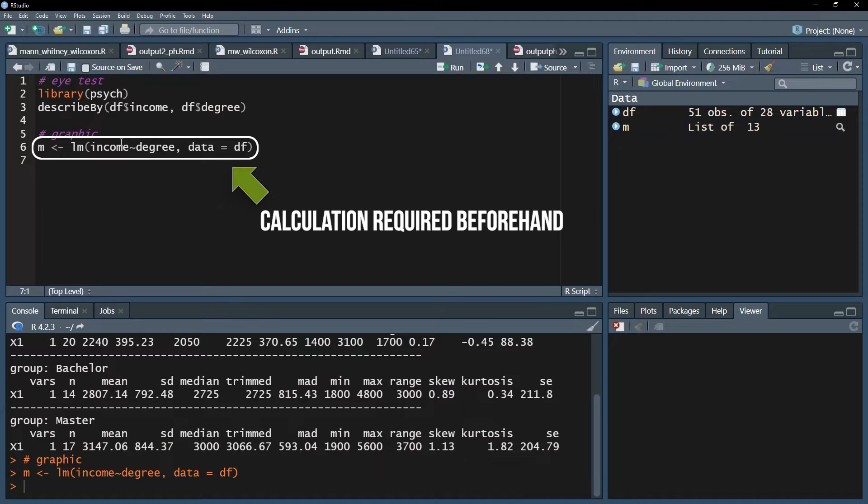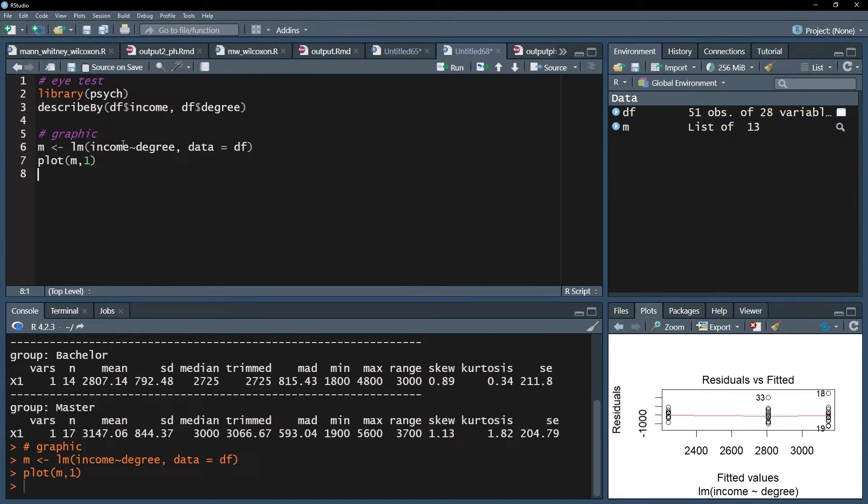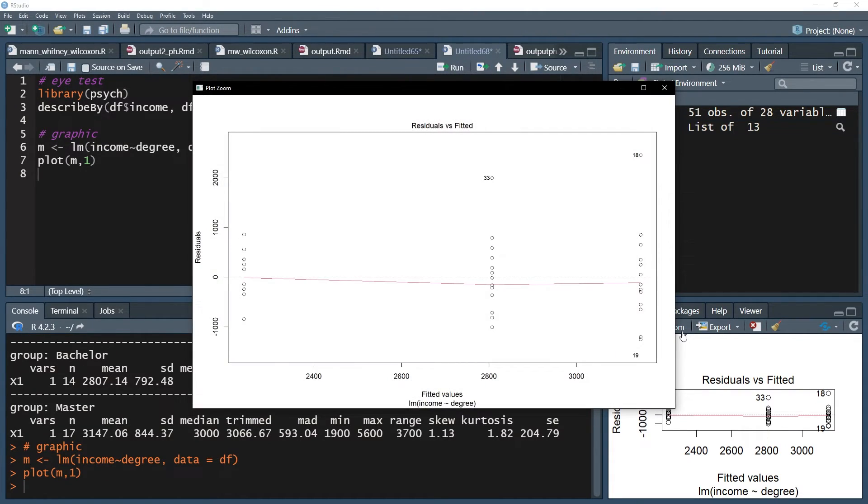It is therefore advised to check the residuals and the fitted values against each other. For this, use the plot function on your residuals and request the graph by adding comma 1. The red line should be as straight as possible, meaning it should be parallel to the x-axis, represented by the dotted line.